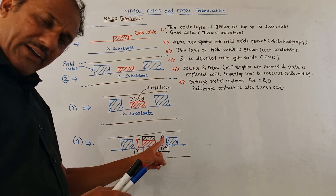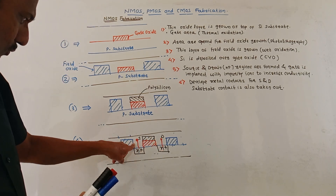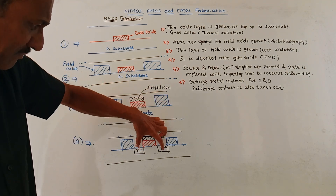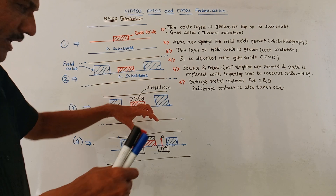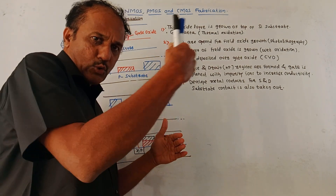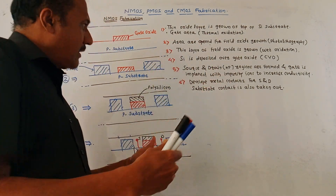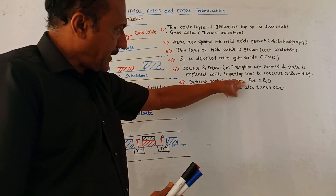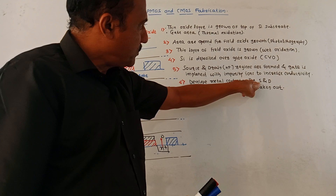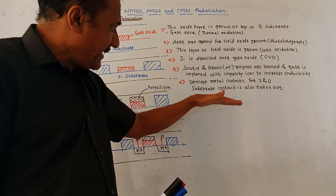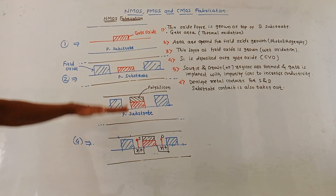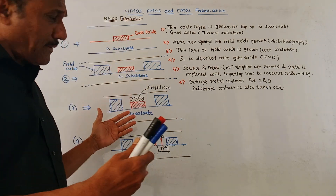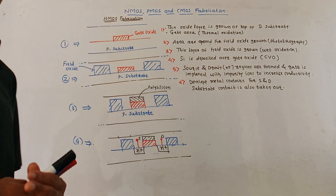Then different metal contacts are developed as shown in the diagram. The first metal contact is source, the second is drain terminal. Metal contacts are grown so we can connect the device to external circuits. The substrate contact is also taken out. This completes the brief explanation of the different steps used for NMOS fabrication.